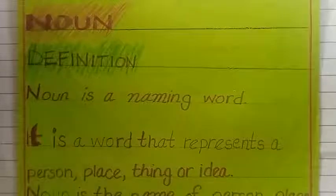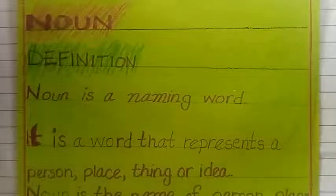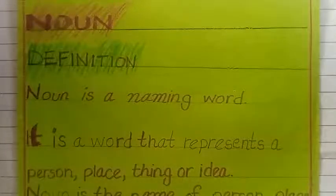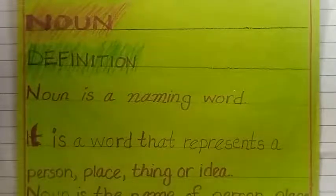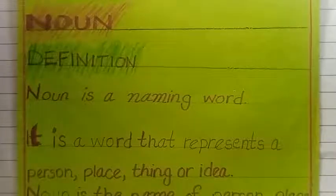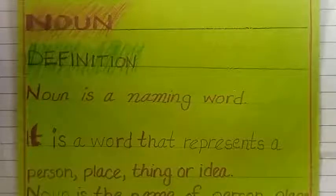Noun is a naming word. Whenever we are talking about noun, noun means it is a naming word. In the world, everything has a name. Every person has a name, every country, every city has a name. Like earth — it is a name, so this is a noun. Like sky, moon, sun — these all are nouns. But we categorize these nouns in different types.